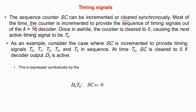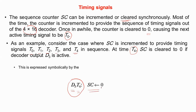Consider the case where the sequence counter is incremented to provide timing signals t0, t1, t2, t3, and t4 in sequence. At time t4, the sequence counter is cleared to 0 if decoder output d3 is active. This can be expressed as: d3 AND t4 — this is the condition — then the micro-operation is to clear the sequence counter.